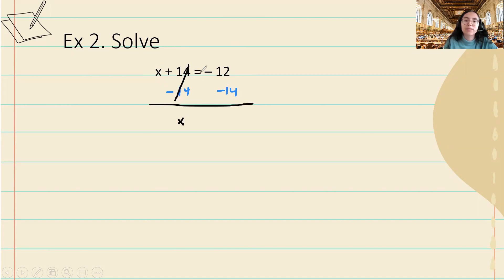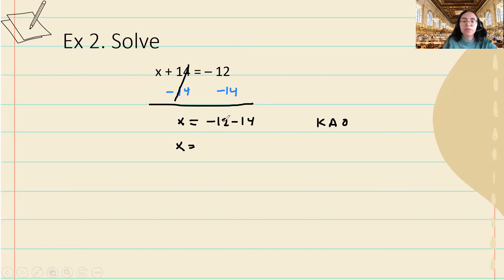I can drop down my x, drop down my equal sign, and perform the operation on the right-hand side. You can always go back to our subtracting integers lecture where we talked about the keep-add-opposite rule. Here we have negative 12, so we keep negative 12 the same, we add instead of subtract, and we add the opposite, which will be negative 14. So our answer is negative 26.